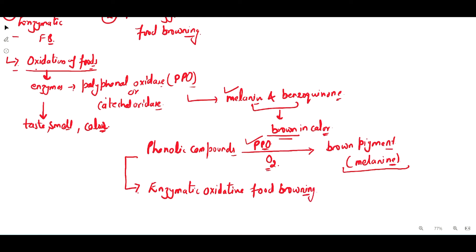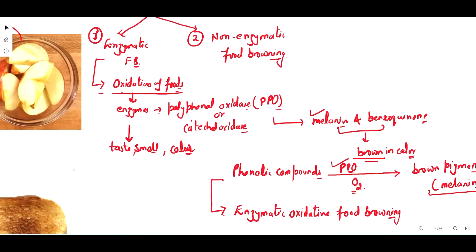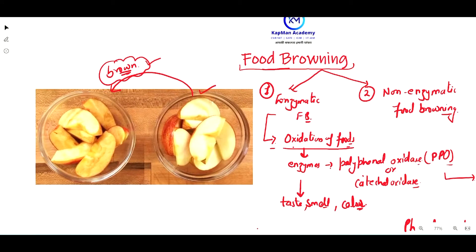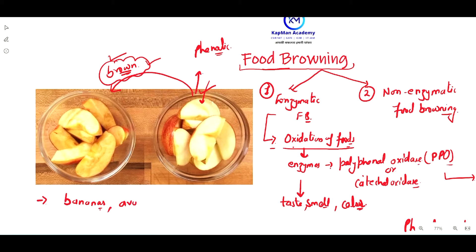For example, let's talk about apples. As you can see in this image, when you cut apples, after a certain time they change color to brown. This happens because apples contain phenolic compounds, and when they come in contact with oxygen, it leads to melanin formation by the activation of phenolase, a polyphenol oxidase enzyme. The same happens in bananas and avocados and other food materials.